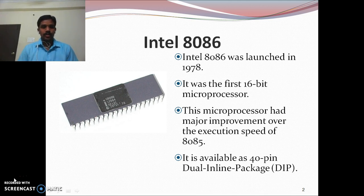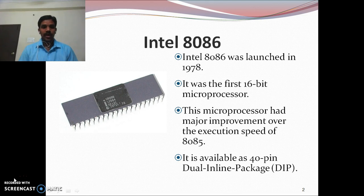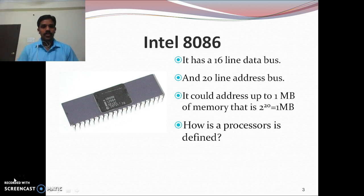The 8086 microprocessor was launched in 1979. It was the first 16-bit microprocessor. The earlier microprocessor was the 8-bit microprocessor, that is the 8085. Compared to 8085, the 8086 microprocessor has major improvements like execution speed. The 8086 microprocessor is available in the form of a 40-pin IC. It has 16 data lines and 20 address lines.